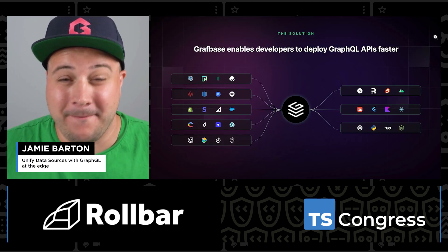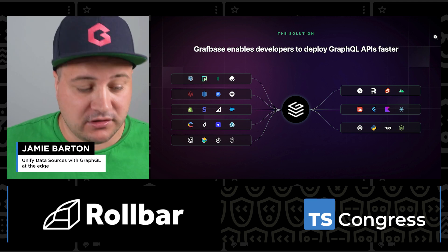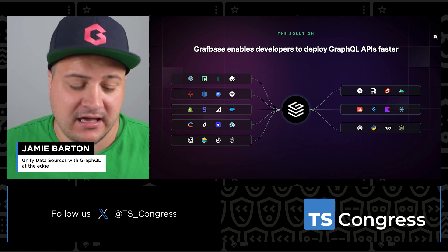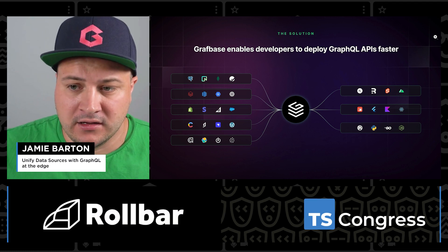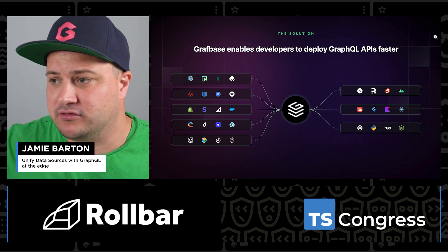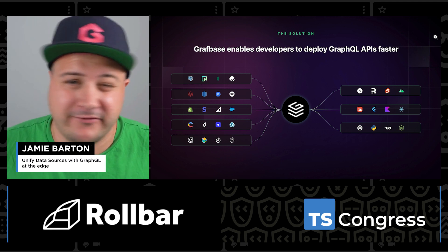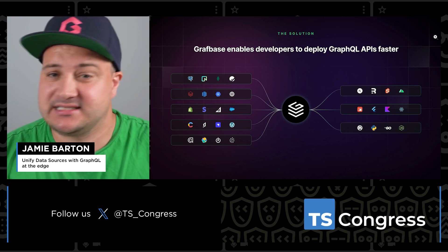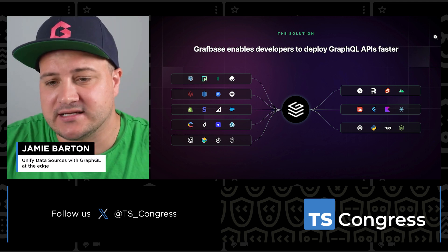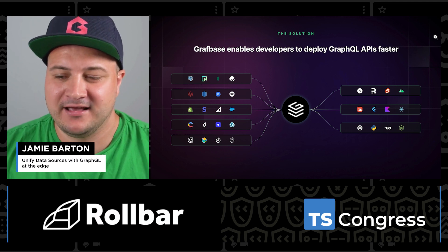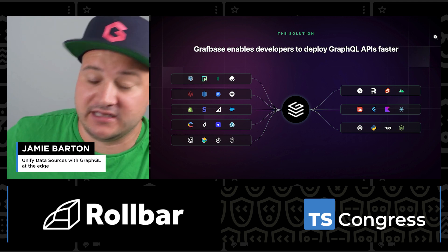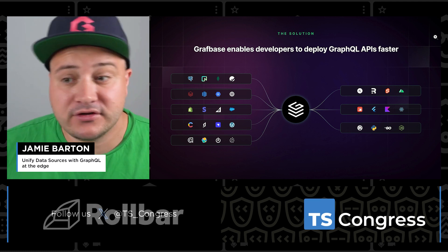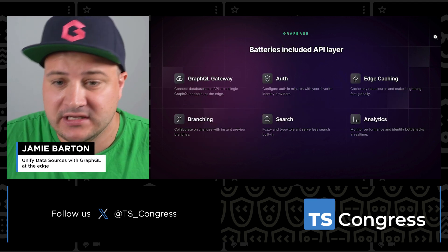That's the one thing we are on a mission to solve at GraphBase. We allow developers to connect any type of database, a warehouse, or a commerce application like Shopify. If you have a product in Shopify that you want to extend with more products or reviews, or content from Hygraph, Contentful, or Sanity, we give you the ability to add data sources, extend them, add your own custom code. We're on a mission to create a single GraphQL API where you have full type safety on the backend and frontend.